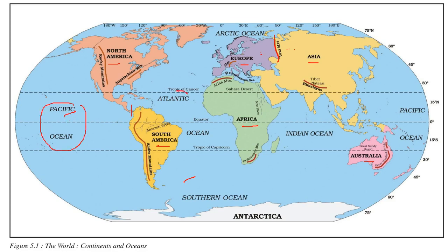When we talk about the oceans, we have the Pacific Ocean, Atlantic Ocean, Indian Ocean, Arctic Ocean, and the Southern Ocean. These oceans are somewhat connected, and we also have Antarctica at the pole.